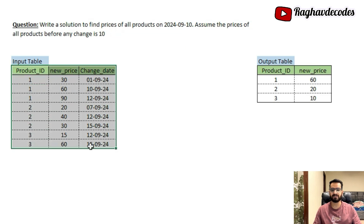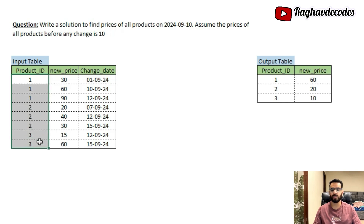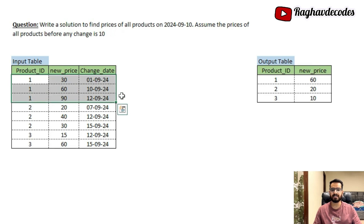On the left we have the input table and on the right we have the output table. In the input table we have details for three products — product ID 1, 2, and 3 — with their corresponding change dates and new prices. For product ID 1, the price on 1st September was 30 rupees, then on 10th September the price was 60 rupees, and on 12th September the price rose to 90 rupees.